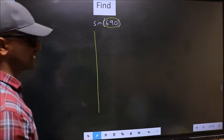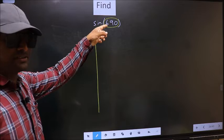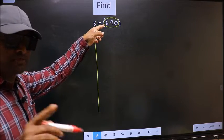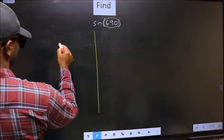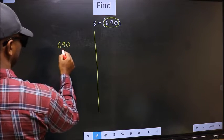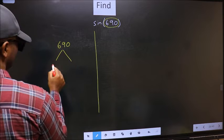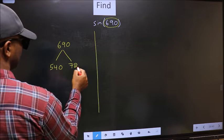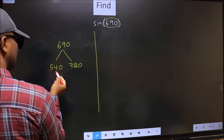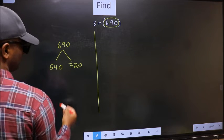Now you should check 690 lies between which two multiples of 180. What I mean is 690 lies between 540 and 720. This is 180 into 3 and this is 180 into 4.